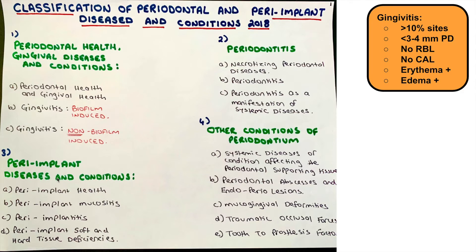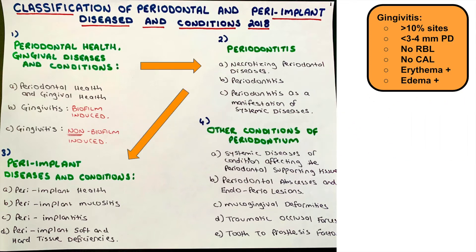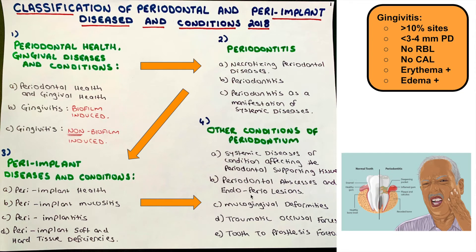For peri-implant diseases and conditions, it's actually very simple. We have peri-implant health (what's normal), peri-implant mucositis involving soft tissue, peri-implantitis involving bone with soft tissues, and peri-implant soft and hard tissue deficiencies. Lastly, the other conditions of the periodontium include systemic diseases or conditions affecting the periodontal supporting tissue, periodontal abscesses and endoperiodonal lesions, mucogingival deformities, traumatic occlusal forces, and tooth-to-prosthesis factors.